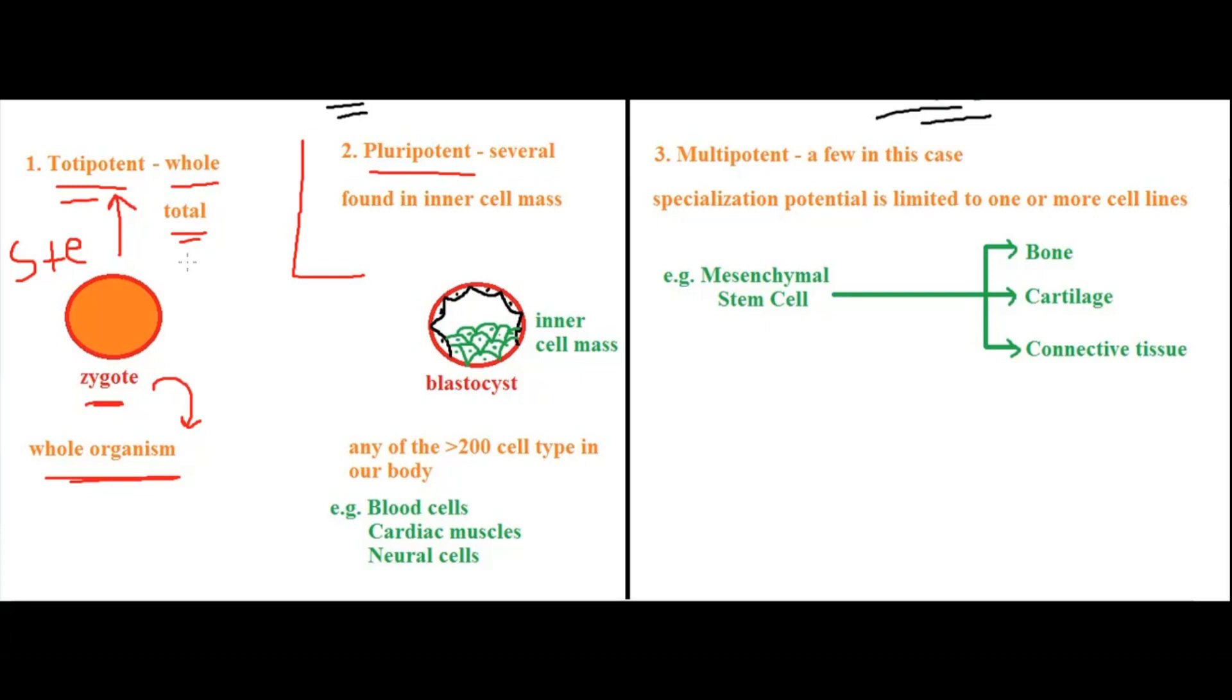Once the zygote is formed, it will start dividing. It will have the first division forming two cells, then four cells, eight cells, and so on. As it goes on dividing, it will reach the blastocyst stage, where it is nothing but a hollow ball with a mass of cells in the center and a single cell layer in the periphery.